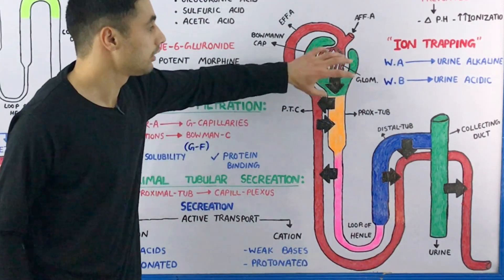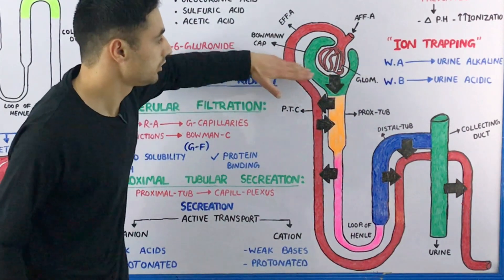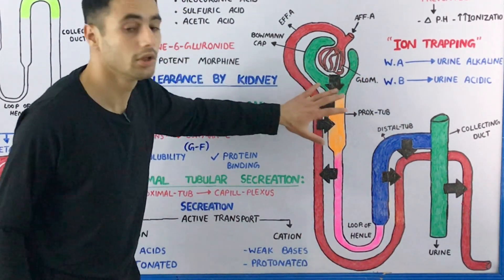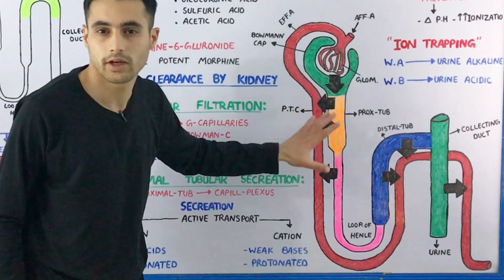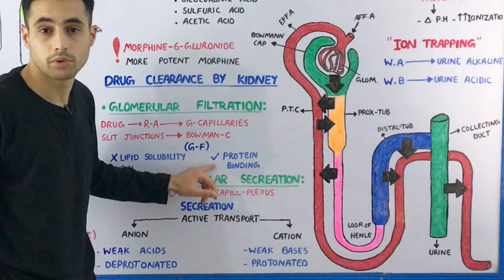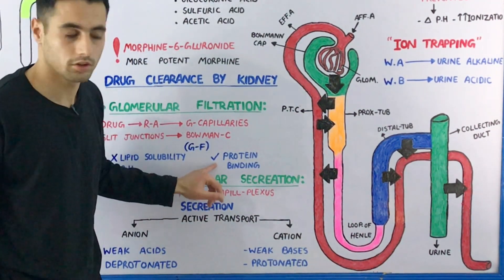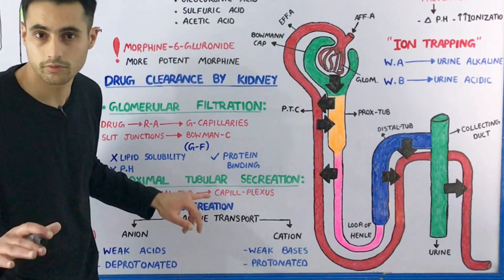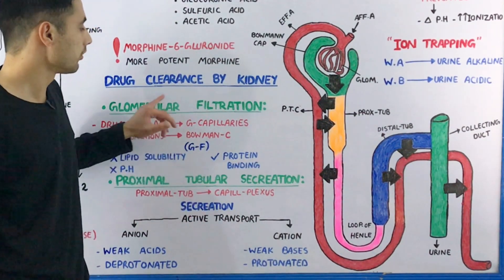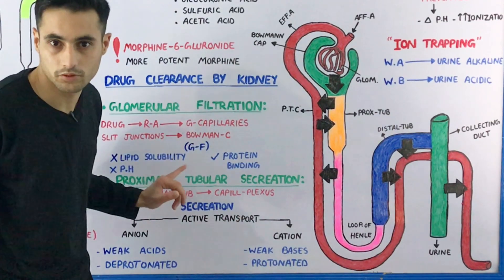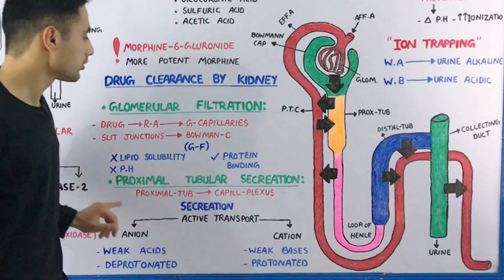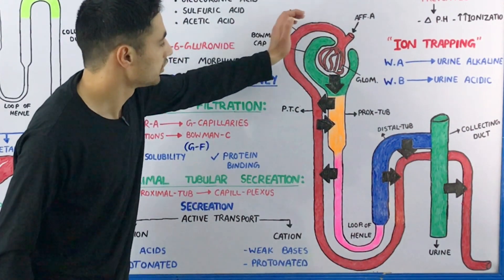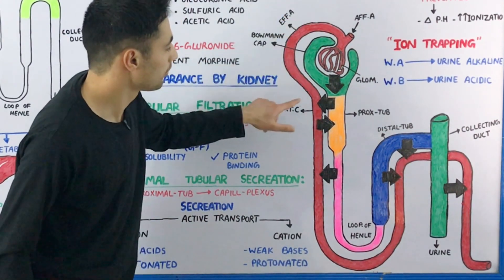Glomerular filtration of the drug is only influenced by protein binding — if a protein is bound to the drug, it cannot be filtered through the slit junctions in the Bowman's capsule. This process is not influenced by lipid solubility, and pH has no effect on glomerular filtration.